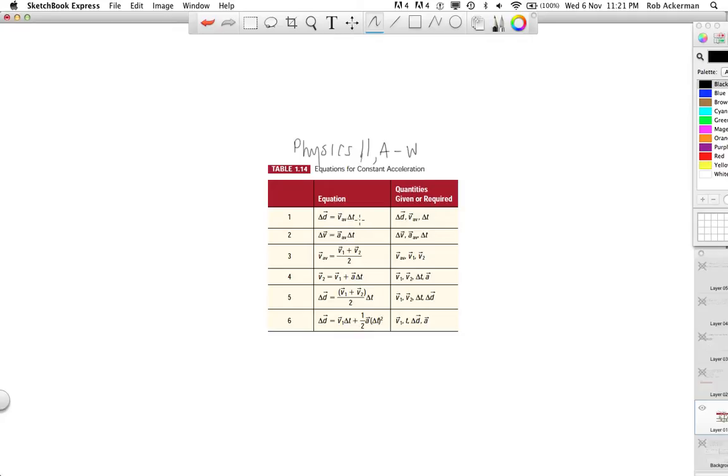Delta d equals v average delta t. That's not a new equation, that one is actually old, and for that matter, so is this one. If you rearrange this to say average acceleration equals, you'll see it's delta v over delta t. We've seen that before. This one here actually might look new, but as I'm going to show you in a moment, it's not really new.